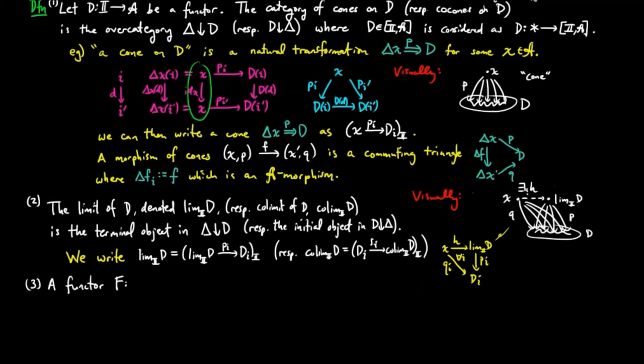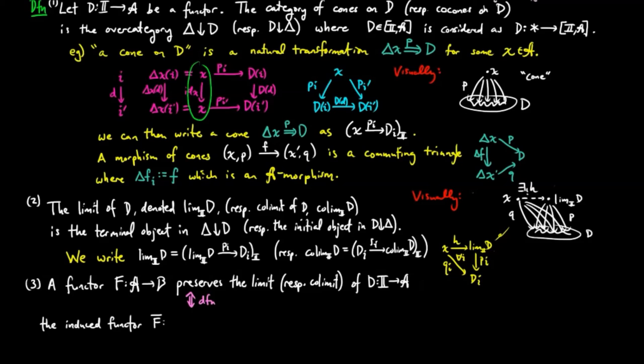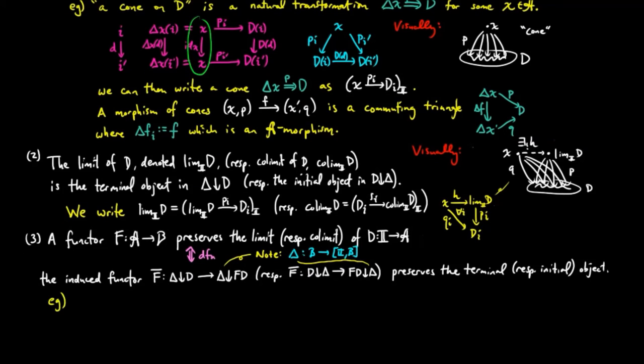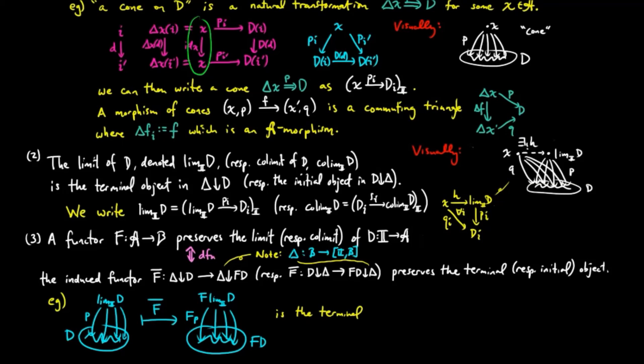Finally, we say that a functor F from category A to category B preserves the limit, respectively colimit, of D if and only if the induced functor of cones, respectively co-cones, preserves the terminal object, respectively initial object. This means that the functor takes the limit cone of D in category A to the limit cone of F(D) in category B, and similarly for the colimit case.